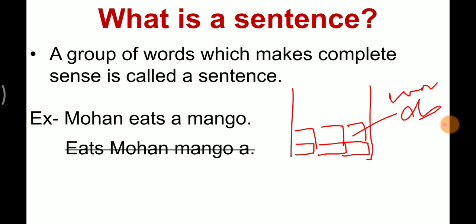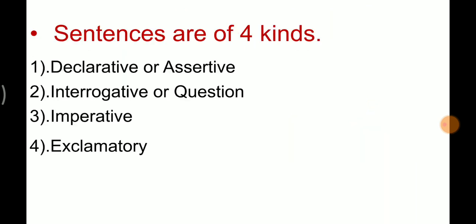Now, there are some salient features. A sentence will always start with a capital letter and will end with either a full stop, exclamation mark, or question mark. Now we will know that sentences are of four kinds.